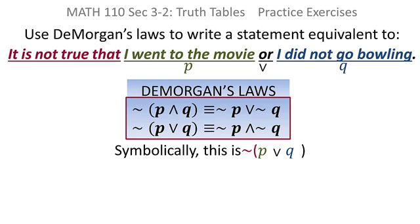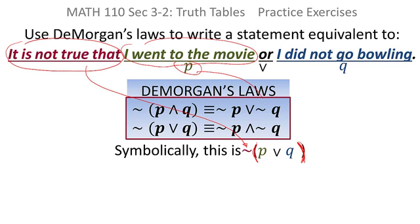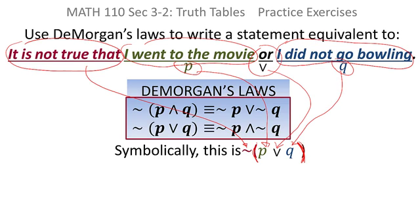So if you look at it, it is not true that becomes the negation. Everything following that negation is negated. Then the statement I went to the movie, I called P. The statement I did not go bowling, I called Q. And then there's an or between them.